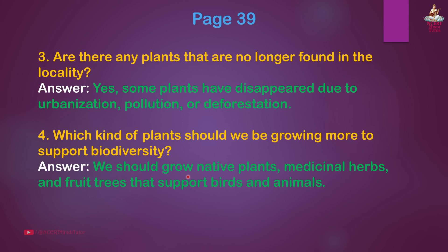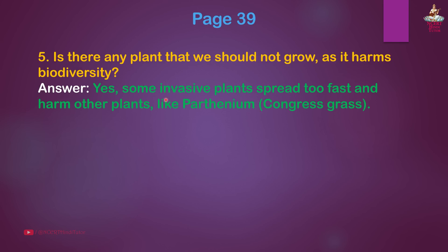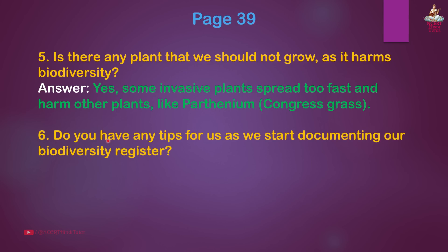Answer: We should grow native plants, medicinal herbs, and fruit trees that support birds and animals. Question 5: Is there any plant that we should not grow as it harms biodiversity? Answer: Yes, some invasive plants spread too fast and harm other plants, like Parthenium, i.e., Congress grass. Question 6: Do you have any tips for us as we start documenting our biodiversity register?